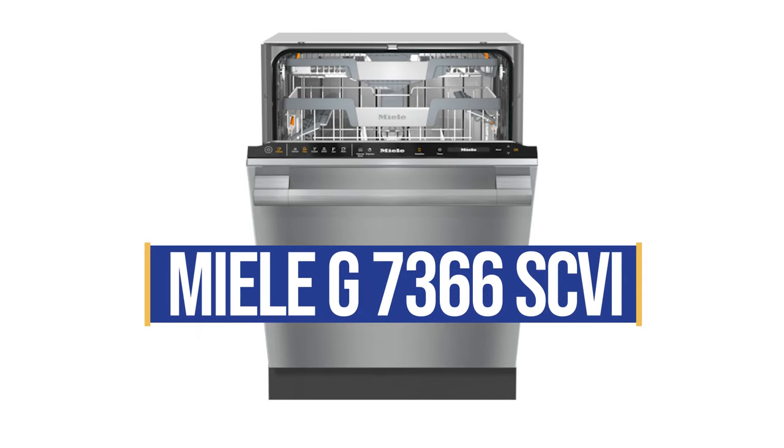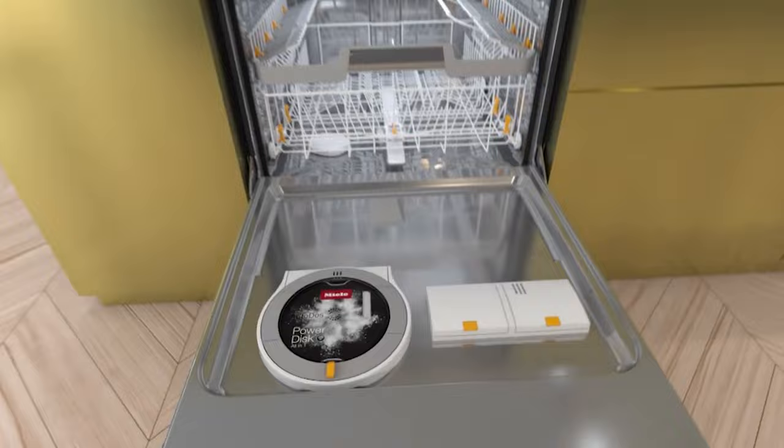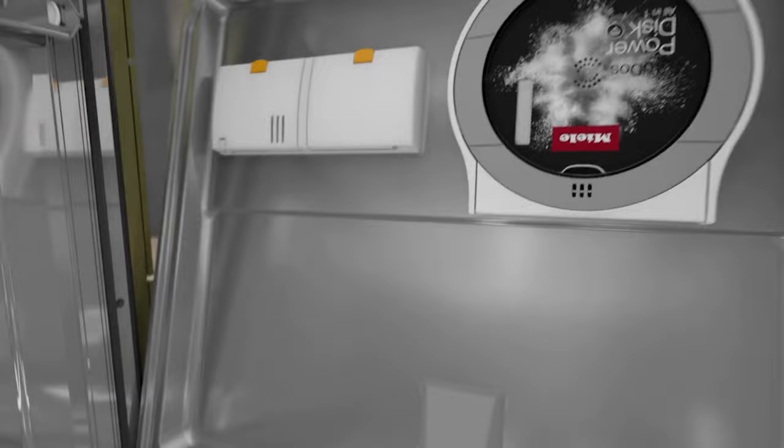The Miele G7366 is supposedly one of the best dishwashers you can buy, with the revolutionary new Autodose dispenser, flexible racks, and a clean-dry drying system. But do these features actually work?